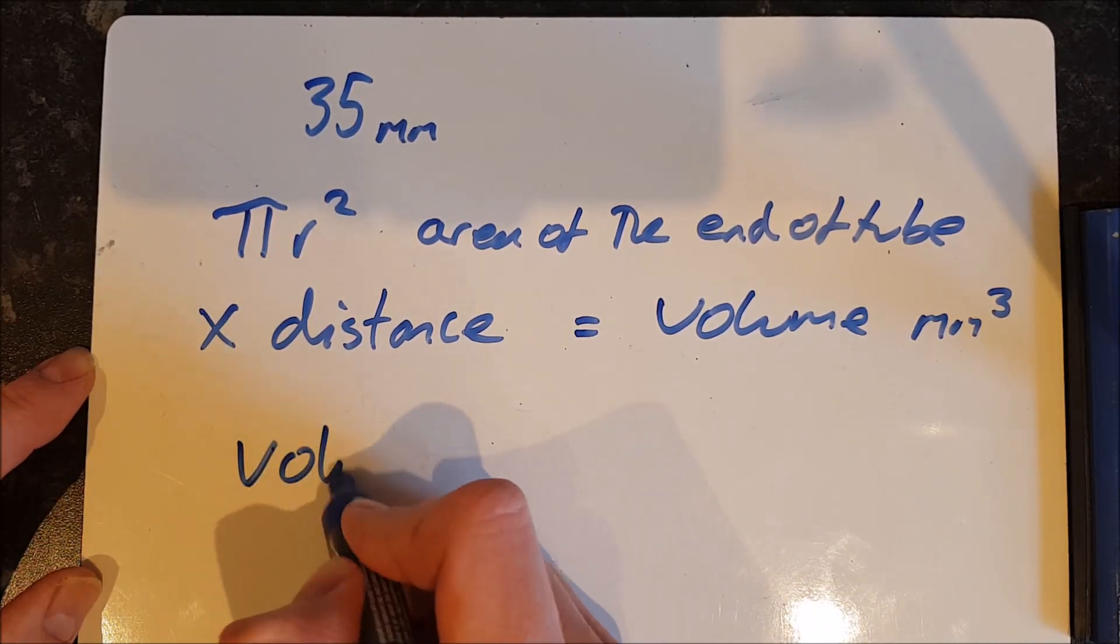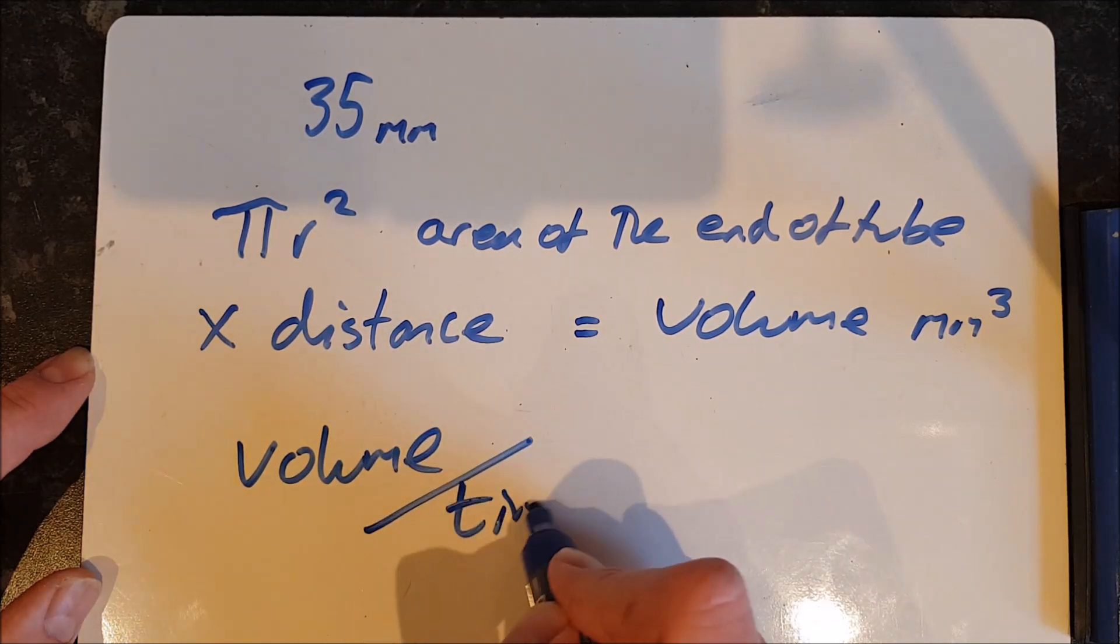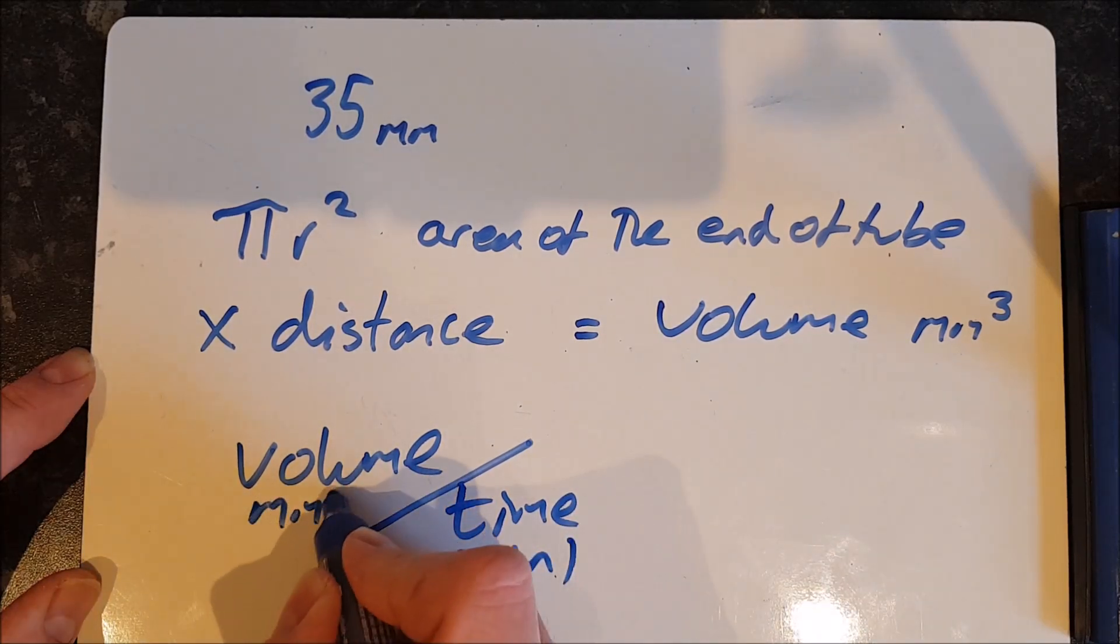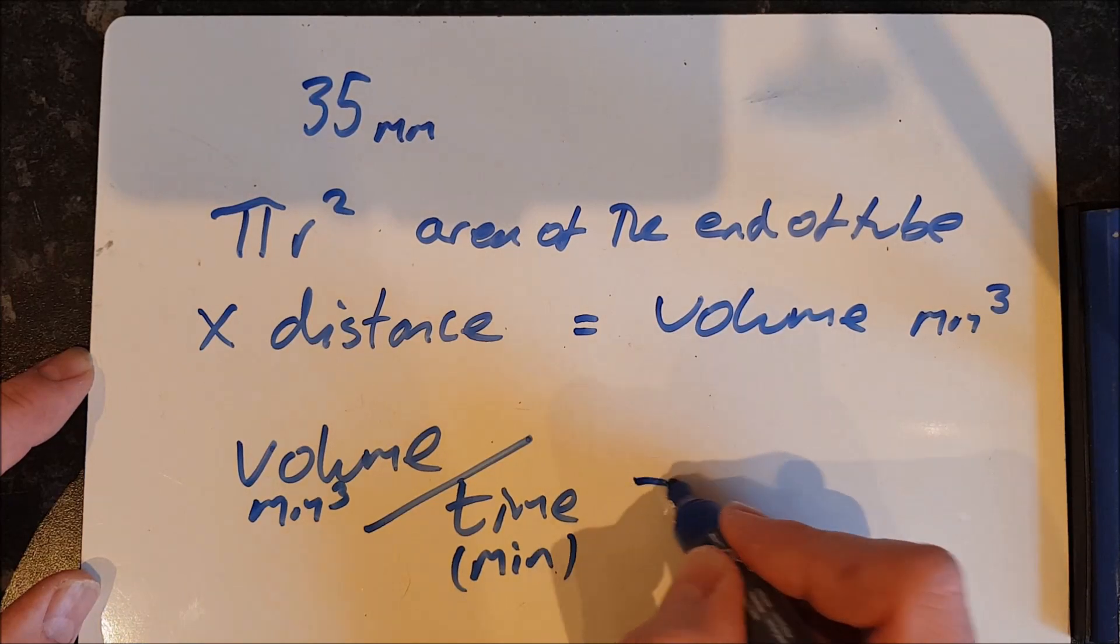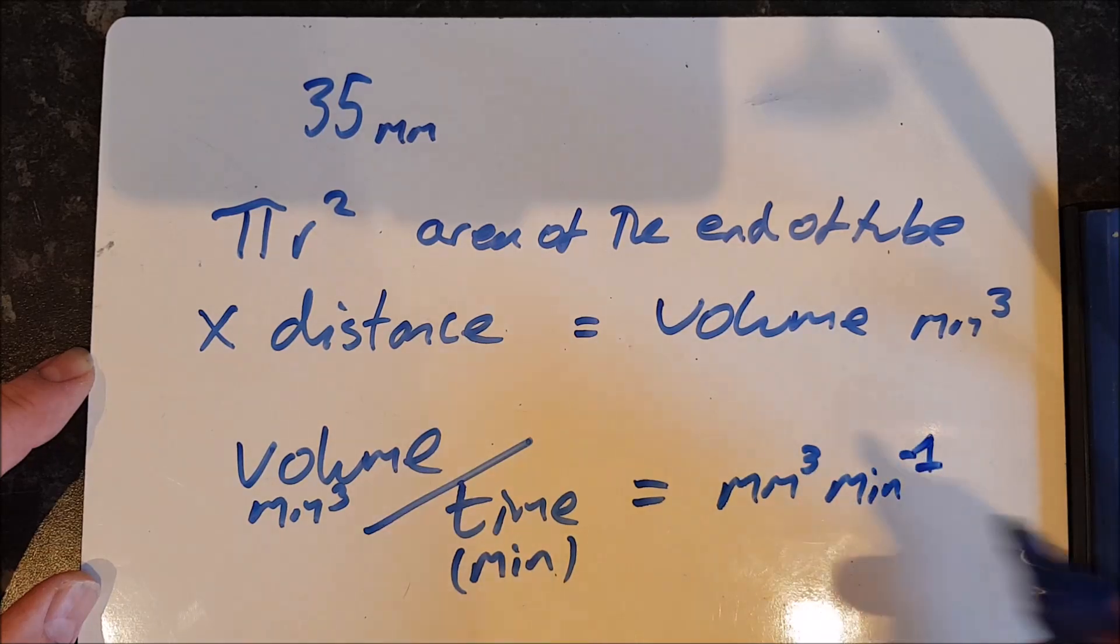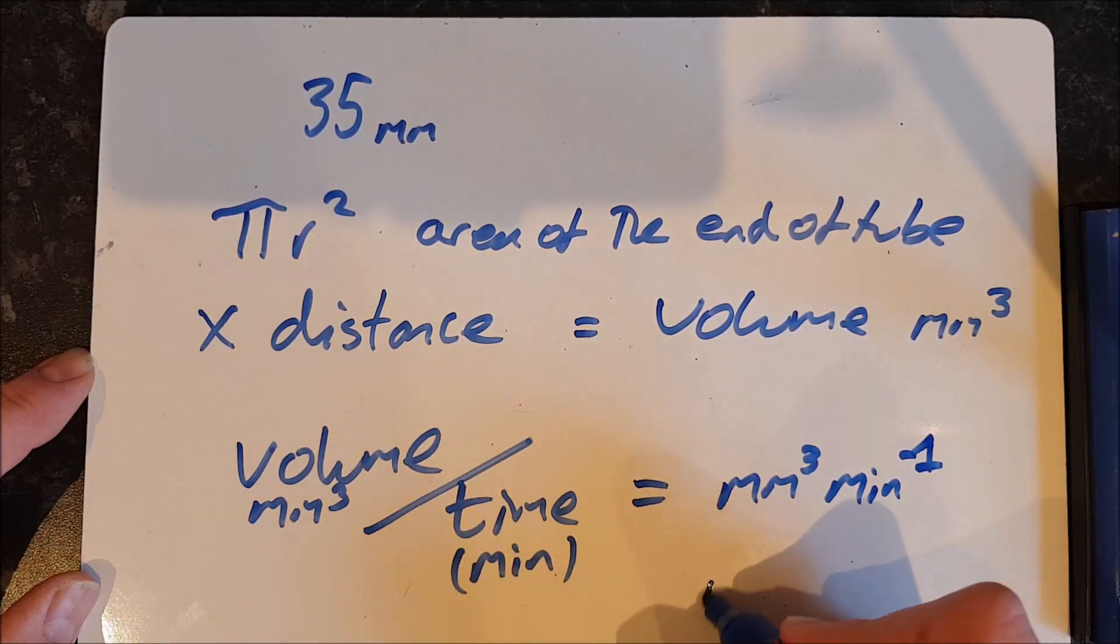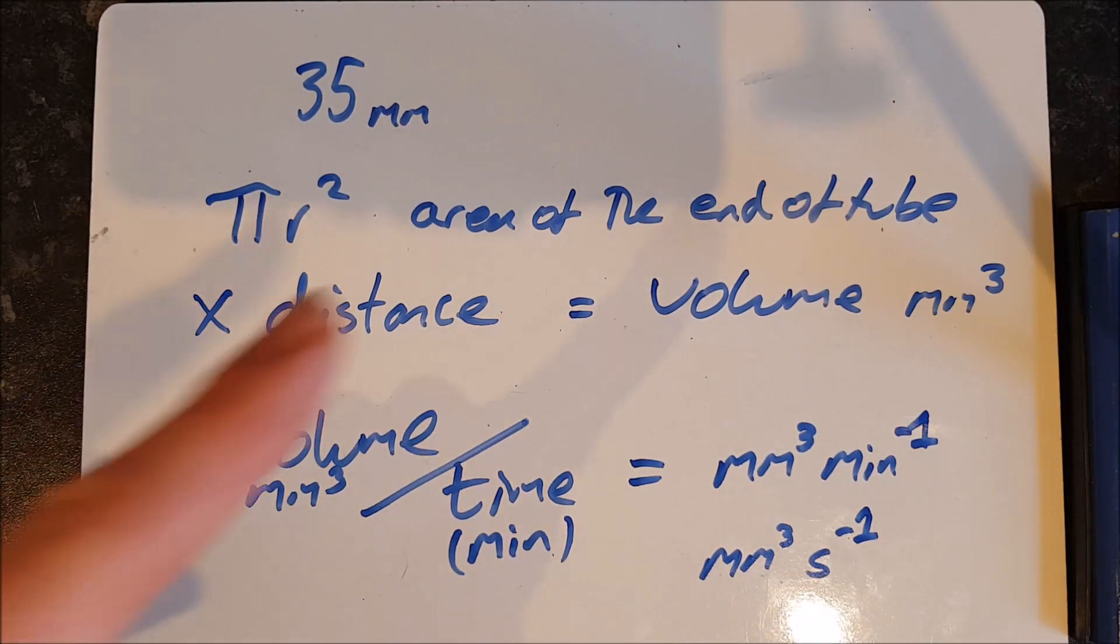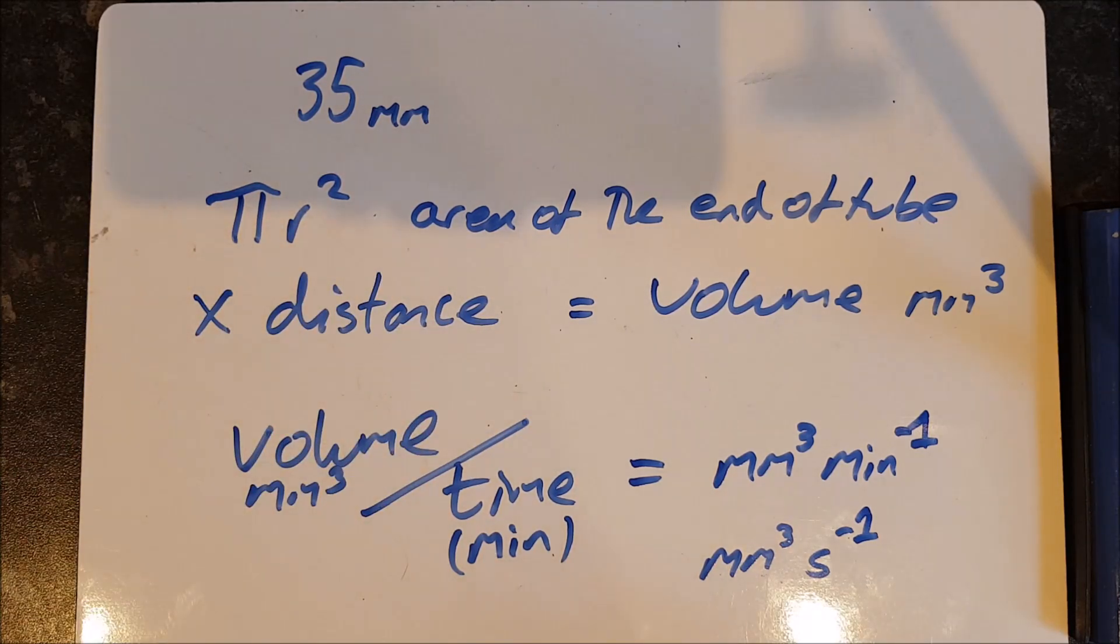So pi r squared L or pi r squared d will give us the volume, and then all you have to do to get that into a rate is divide that by the time. So volume divided by the time, for example we just did it in minutes, will equal millimeters cubed min to the minus one, or we could do it in seconds so it'll be millimeters cubed seconds to minus one. Remember you have to be able to know these formulae and how to calculate volumes of a cylinder and things like that and areas of a circle. Be careful, quite often they might quote you the diameter because you'd measure the diameter of the capillary tube so you'd need to halve it to get the radius.